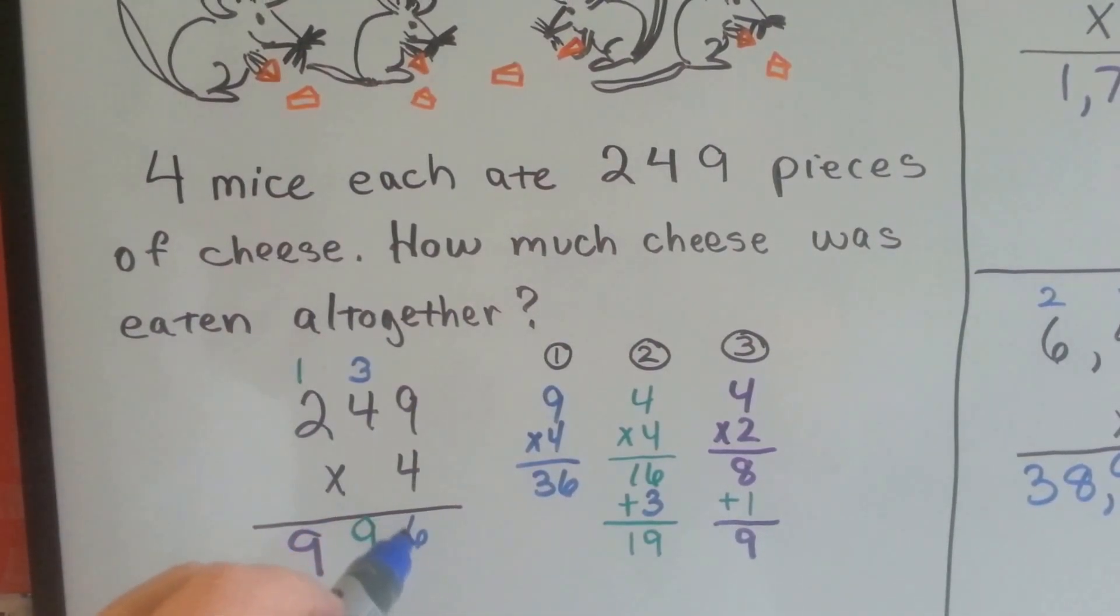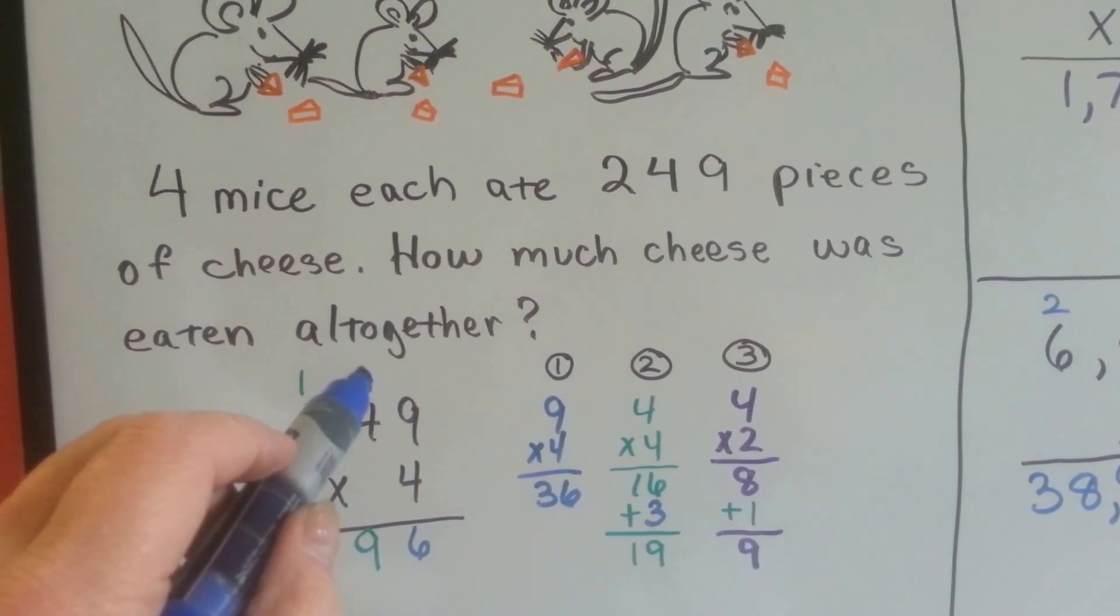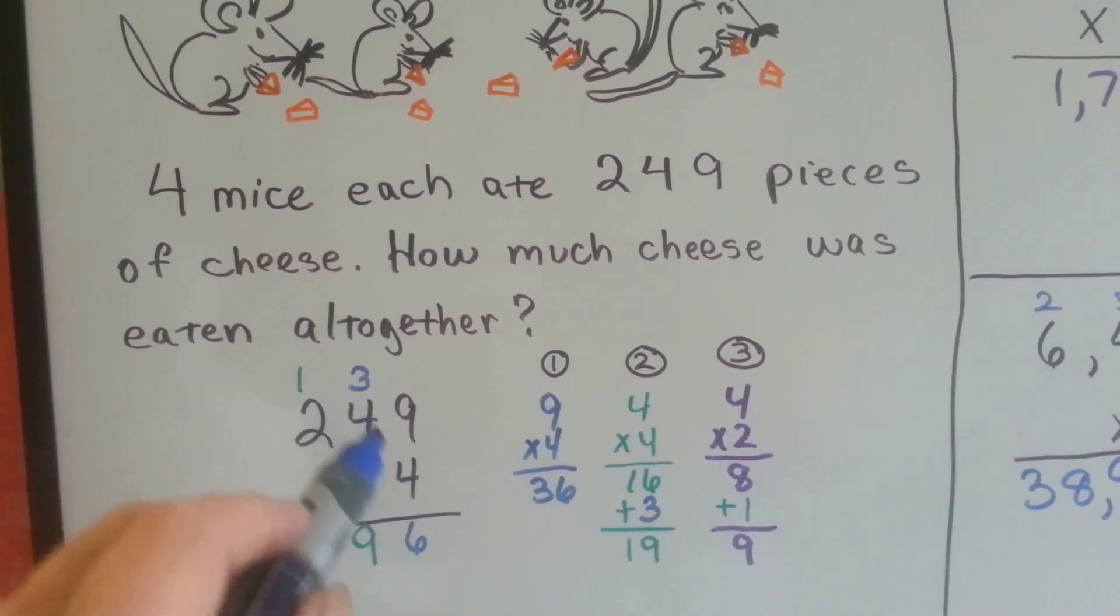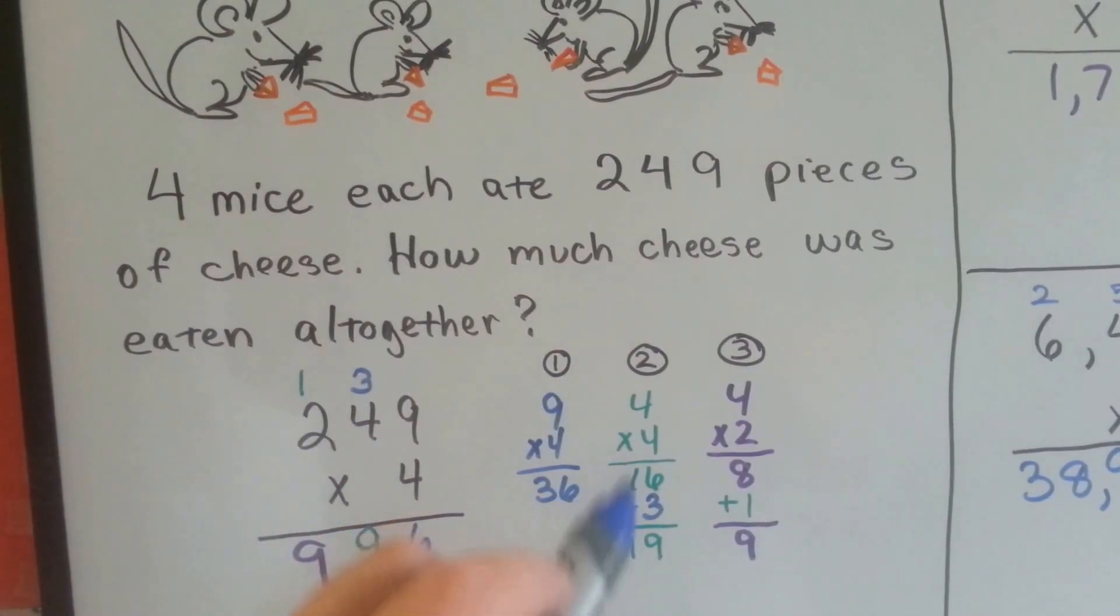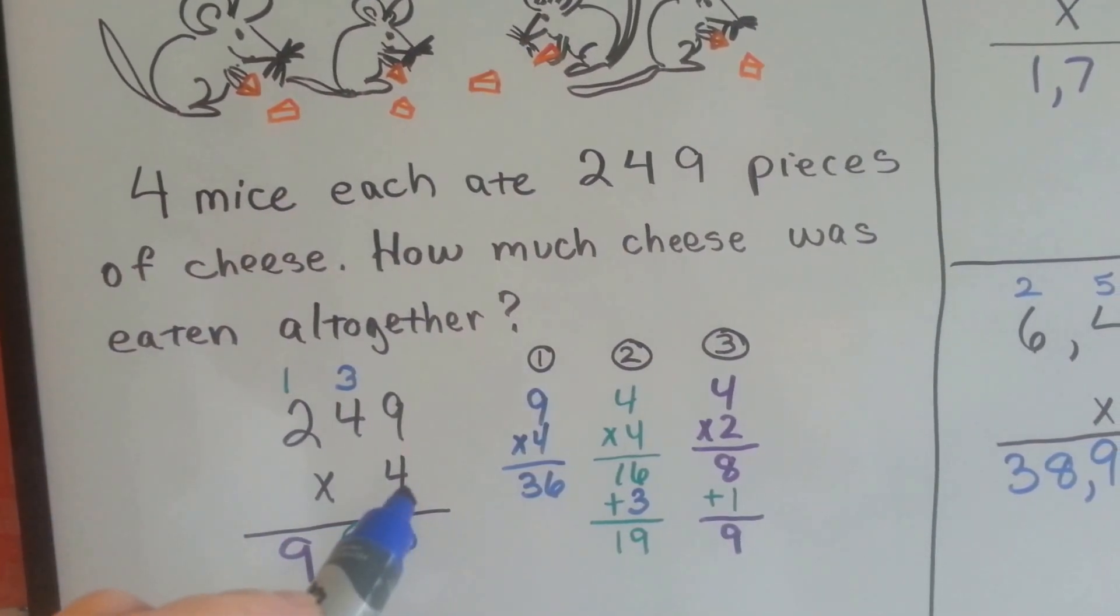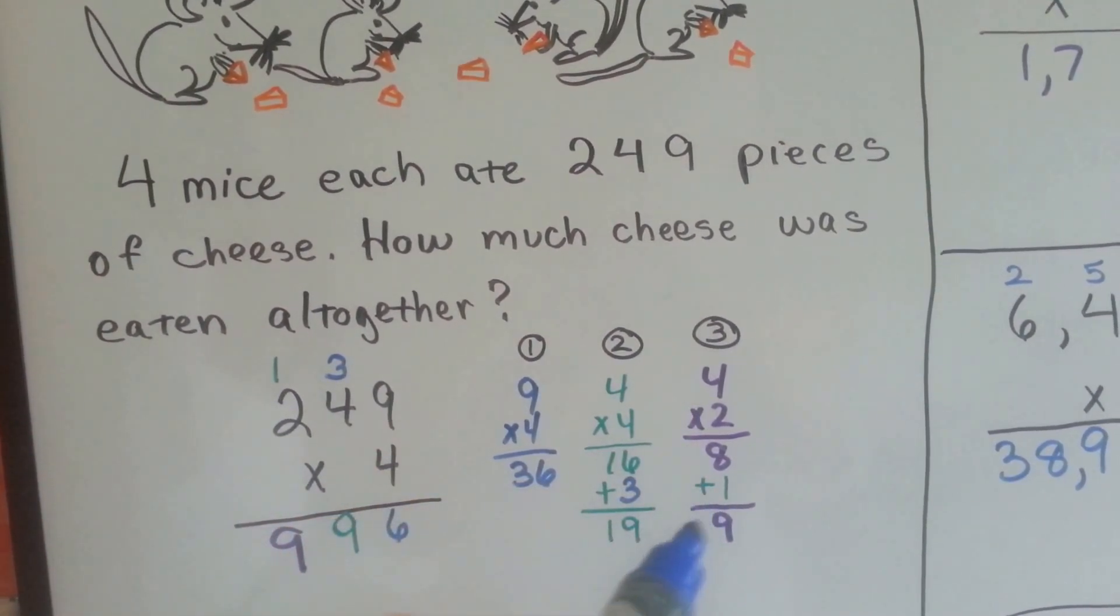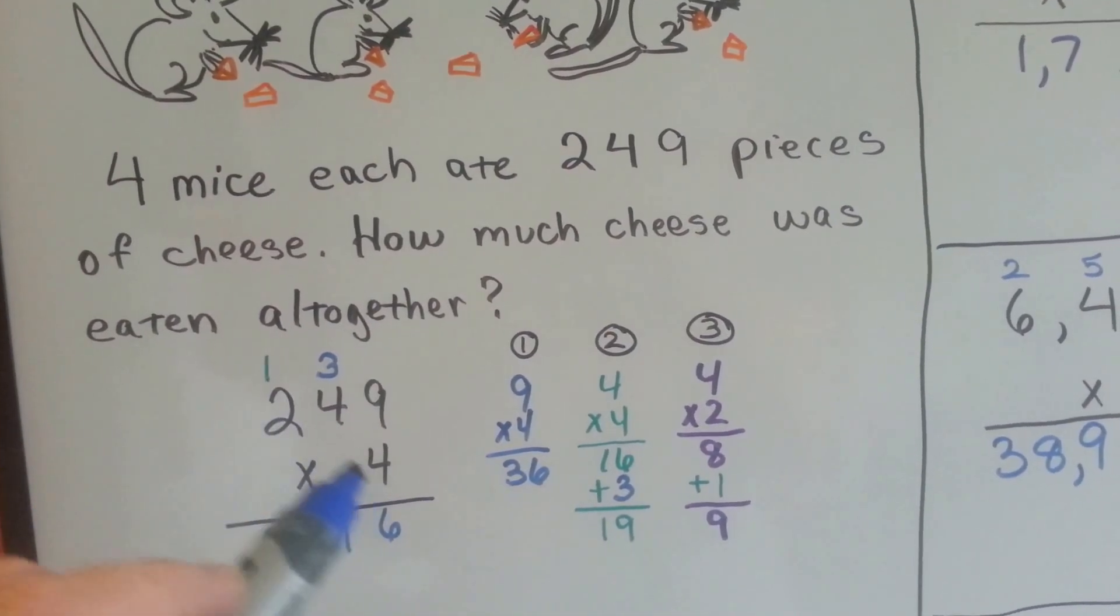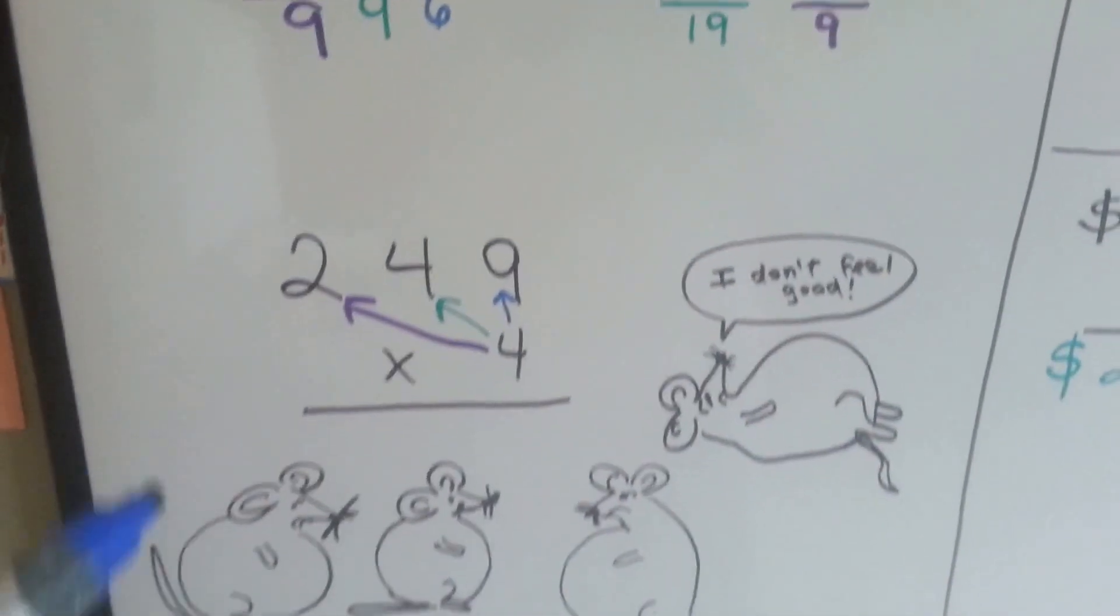Because we can't put the 36 here, just like adding, we have to regroup it and put it into the tens column so the 3 goes up here and the 6 goes down here. Now we have to do 4 times 4. It's this one's turn. We do the 4 times 4 and we add the 3. So we get 19. We carry the 1 to the hundreds column and put the 9 down. Now we have to do 4 times 2. 4 times 2 is 8. And we have to add the 1 that we carried over from the tens column, from the 19.